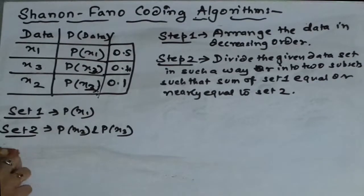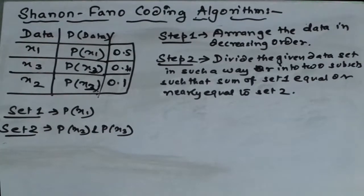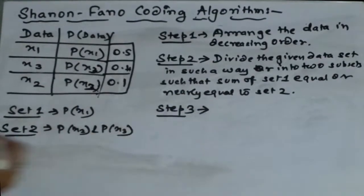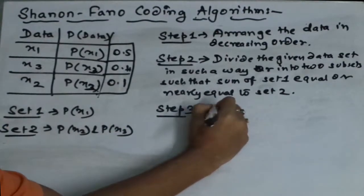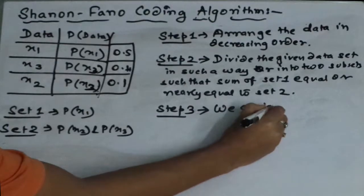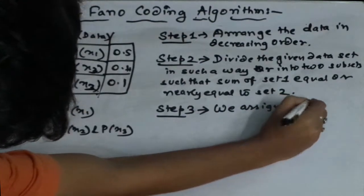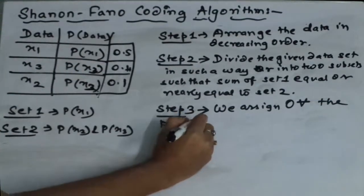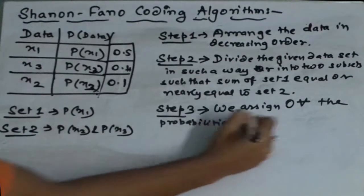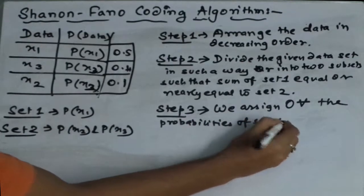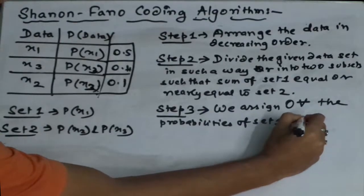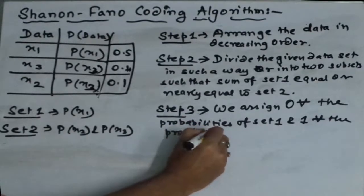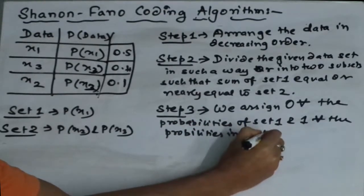Now our next step, that is step 3. What we have to do? We assign 0 for all the probabilities of set one and 1 for all the probabilities in set two.